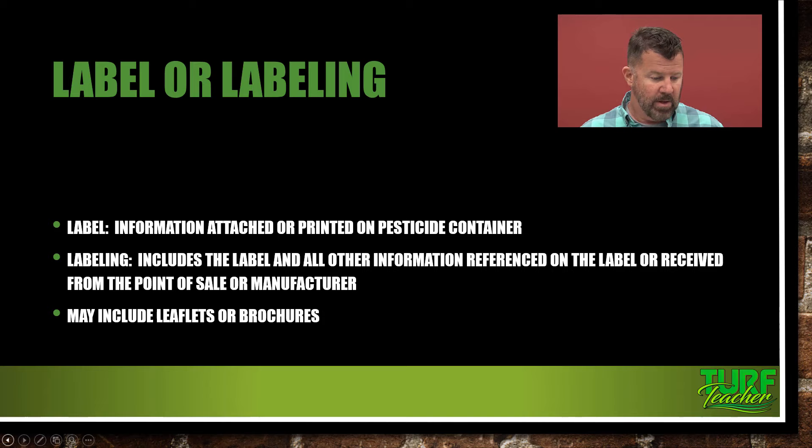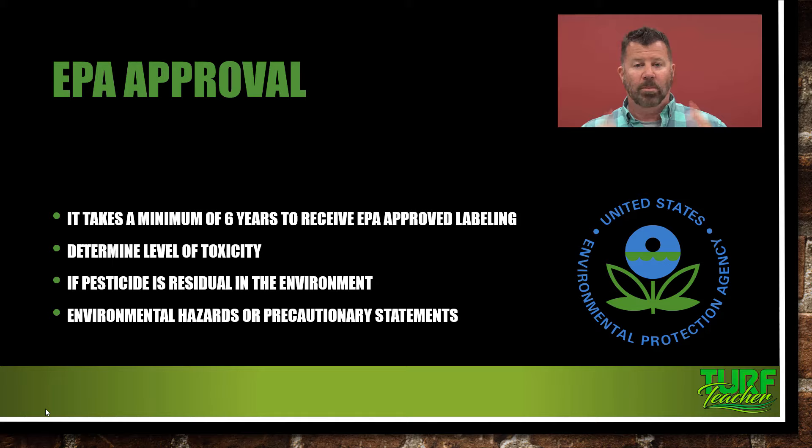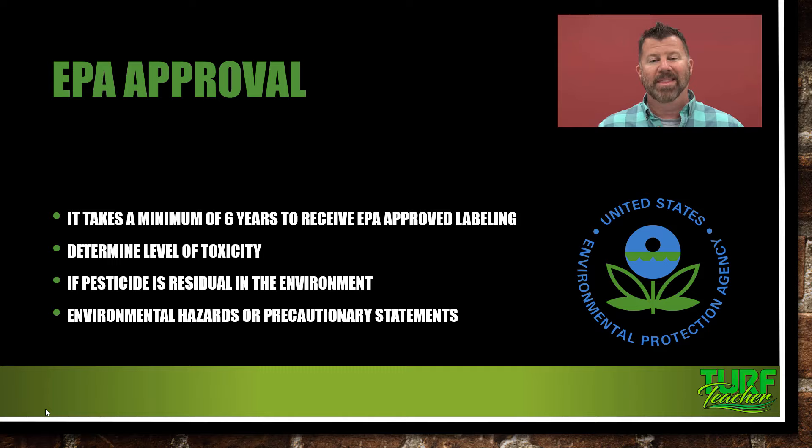Some pesticide containers actually have a little book that looks almost like the size of an index card, but it's thick and glued to the container. Some would be like half a sheet of paper — about eight and a half by five inches — glued to it, and you peel it from the side and it has all that pertinent information. But that is the label.